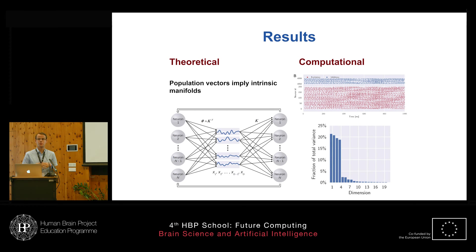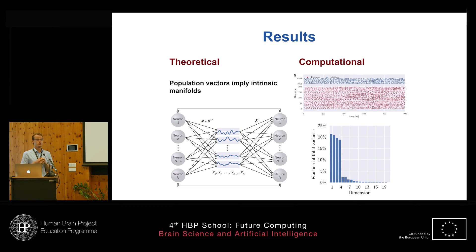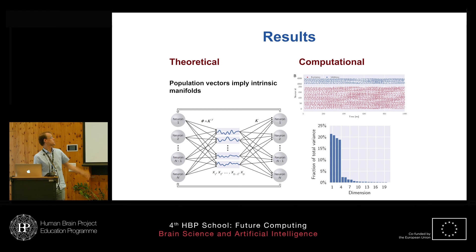I have proposed a new way of doing this that is based on population vector code. We assume that there are some variables that the network is encoding, and then via some mathematics — basically a scheme where you decode and encode variables — you can use this to construct such a network that becomes low dimensional, without using any clusters or artificial features.